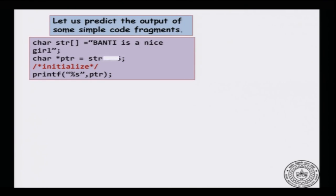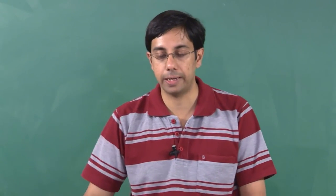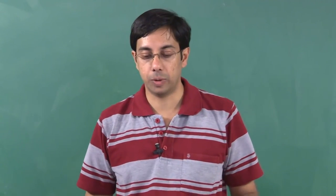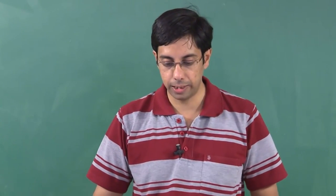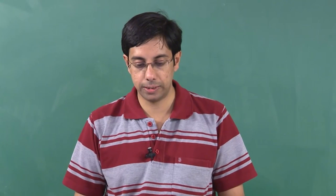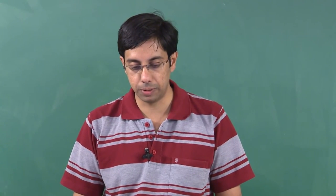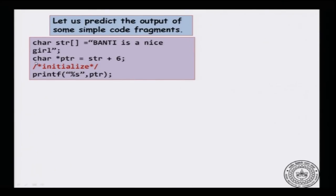Now let us look at a slightly different array. What happens if you have a character array? I have char str array initialized to the string "Bunty is a nice girl", and then I have a character pointer — char *ptr — which is assigned str plus 6.